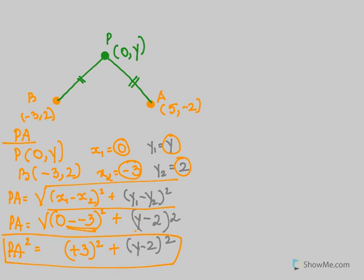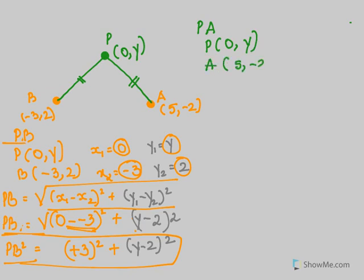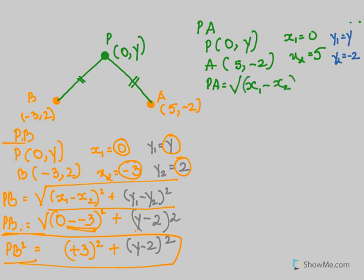Now I'm going to find PA. P is (0, y) and A is (5, -2), so x₁=0, x₂=5, y₁=y, y₂=-2. The formula for PA is √[(x₁-x₂)² + (y₁-y₂)²].